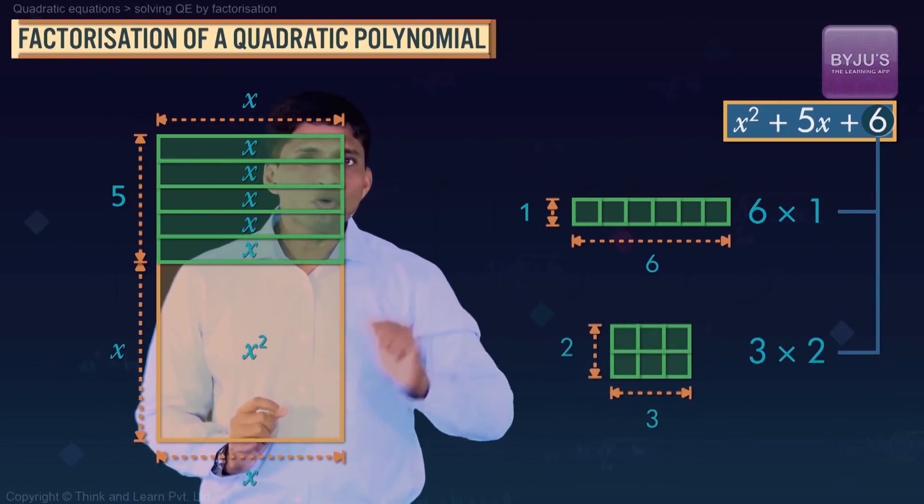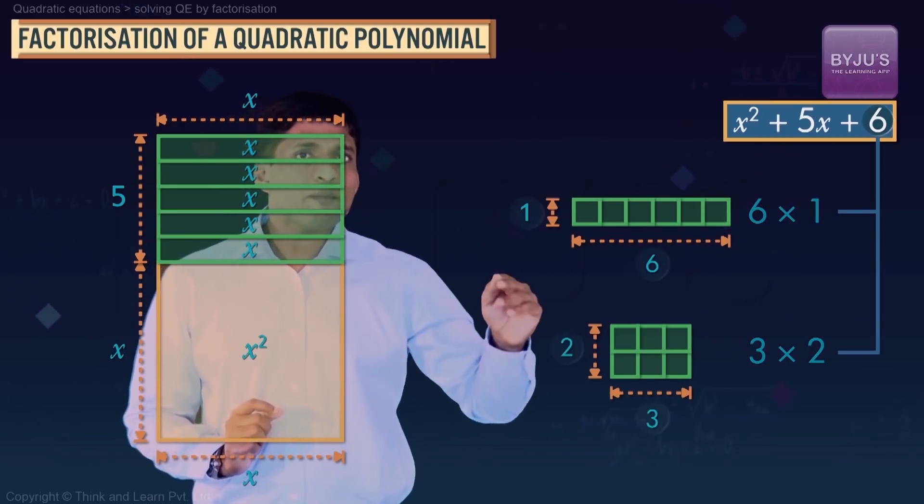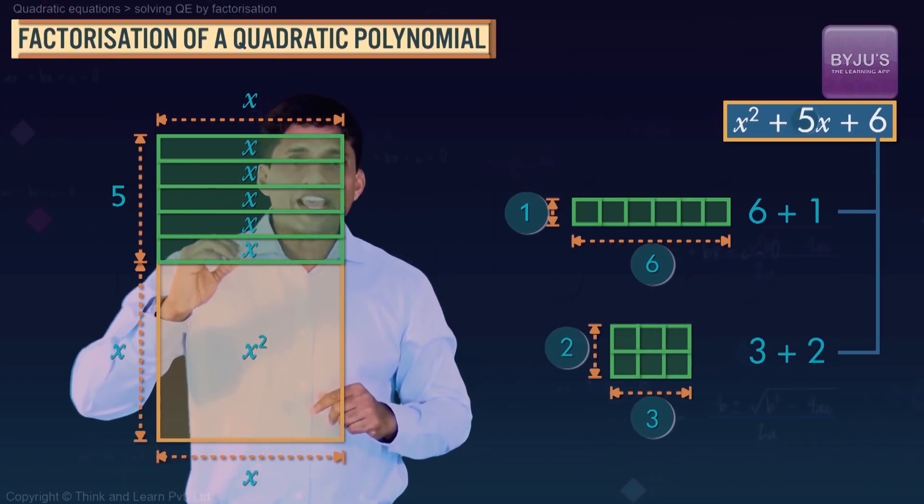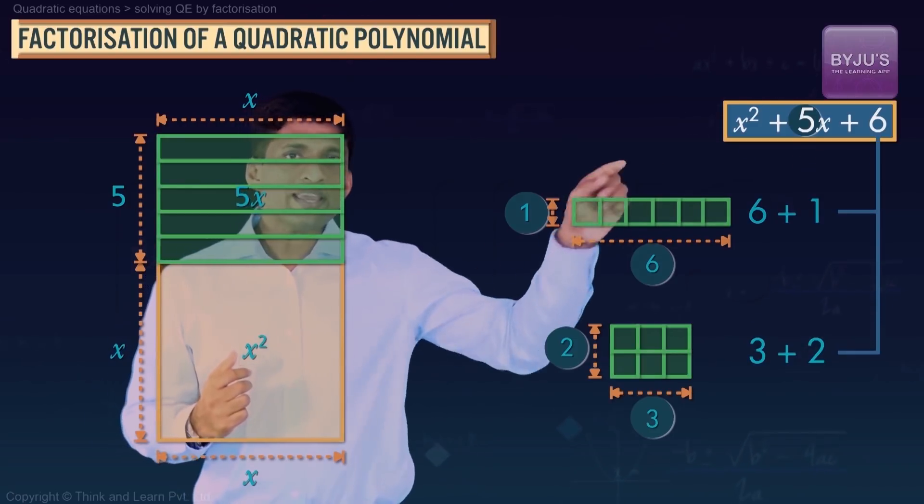But while doing this, you should make sure that the sum of this length and breadth is matching with the coefficient of x, or 5x in this case. That is why this 3 and 2 will exactly match.